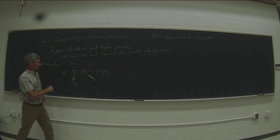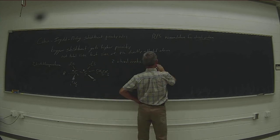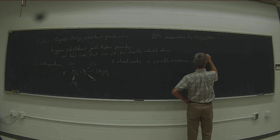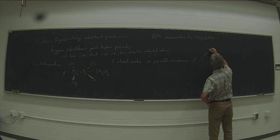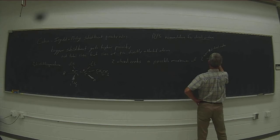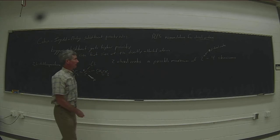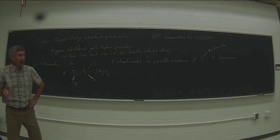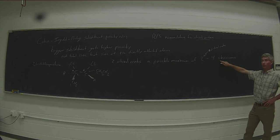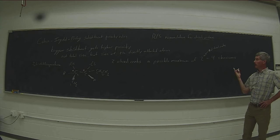With two chiral centers, we have a possible maximum of 2^n — where n is the number of chiral centers — giving four possible stereoisomers. You won't necessarily always have four because you might have a meso compound where the mirror image is superimposable. But this molecule has four stereoisomers because there's not enough symmetry to create a meso compound.